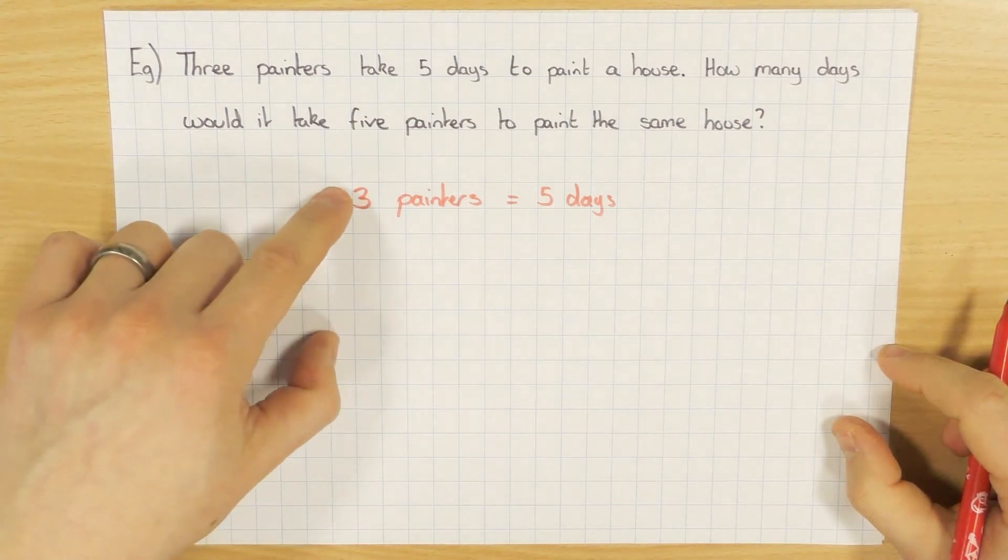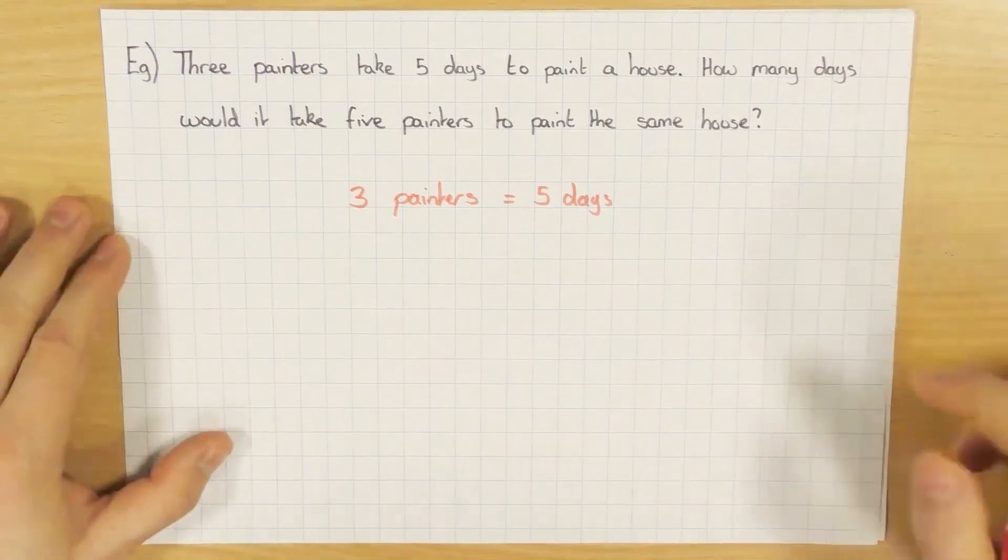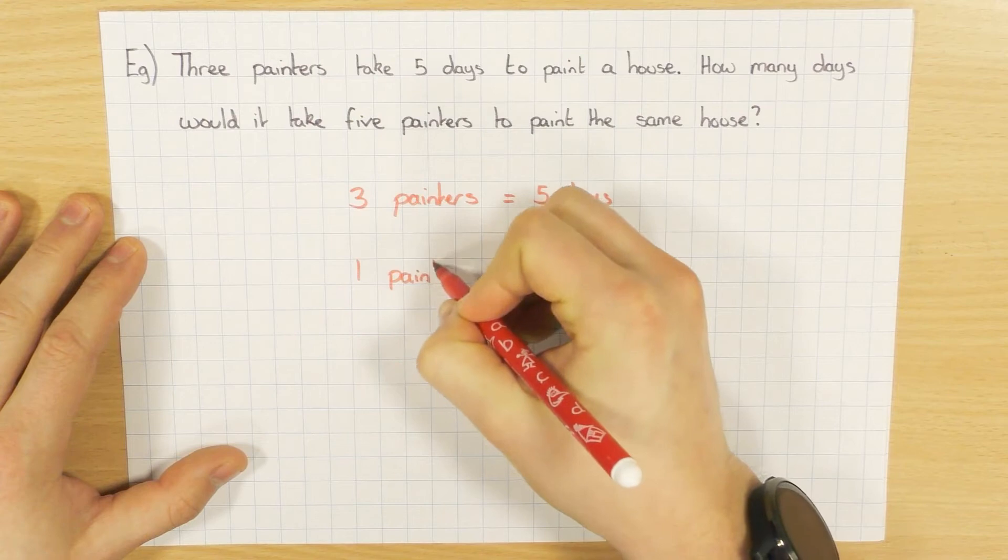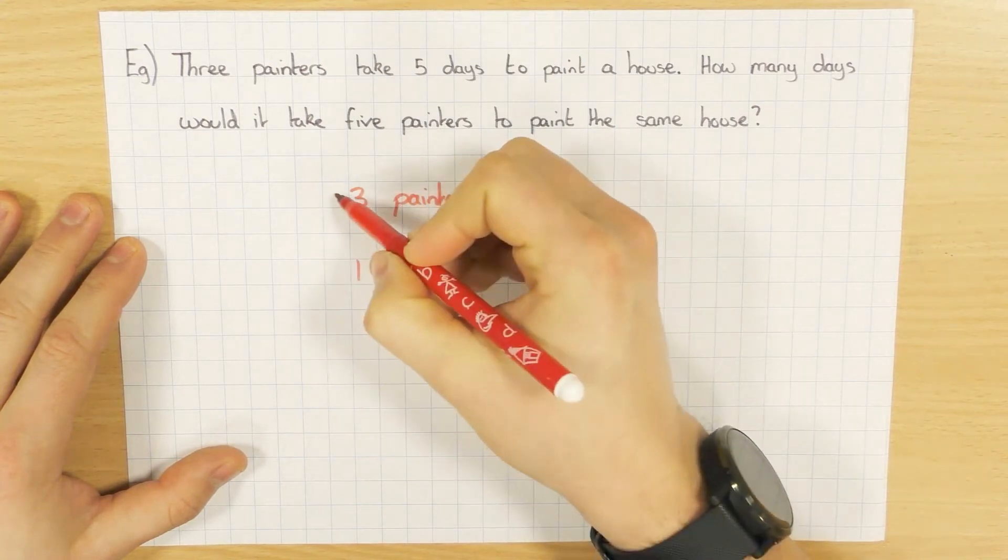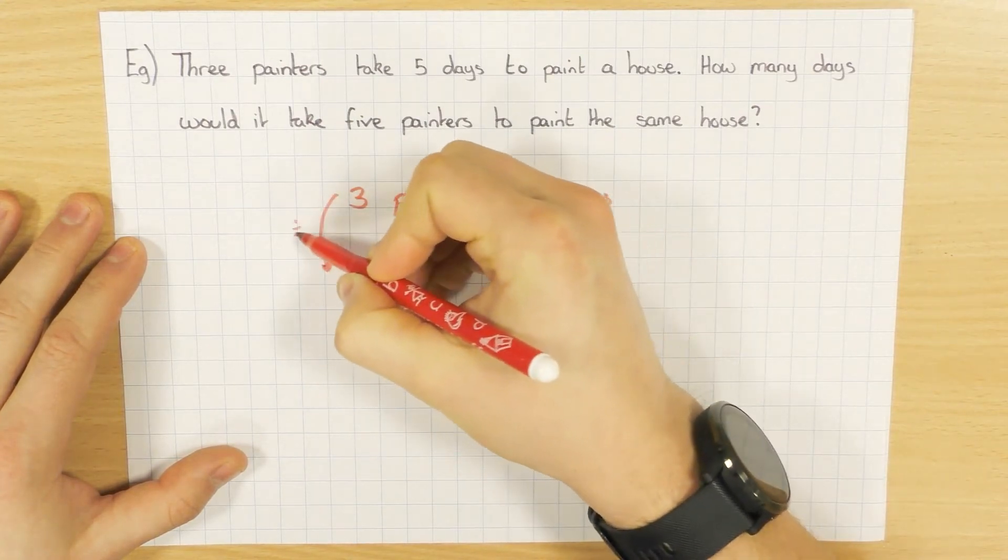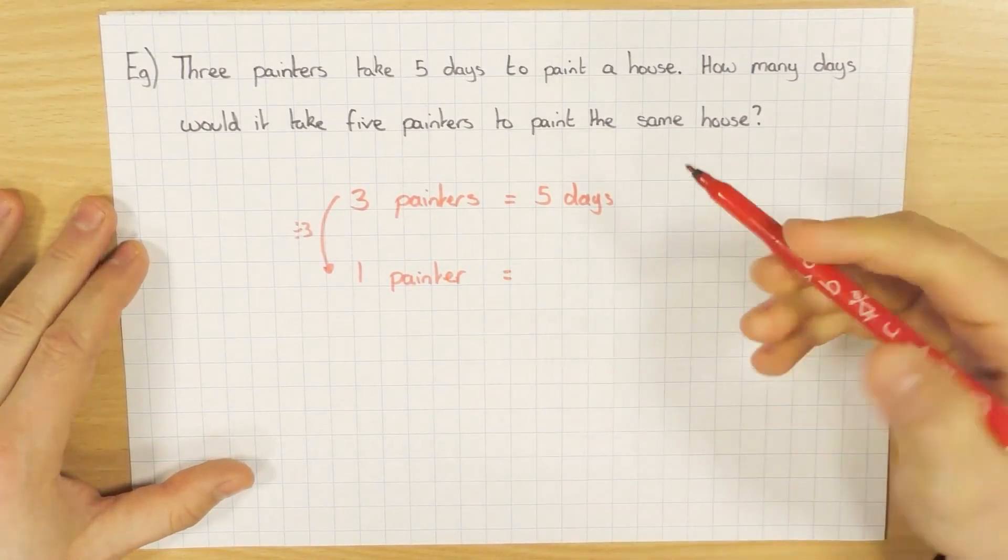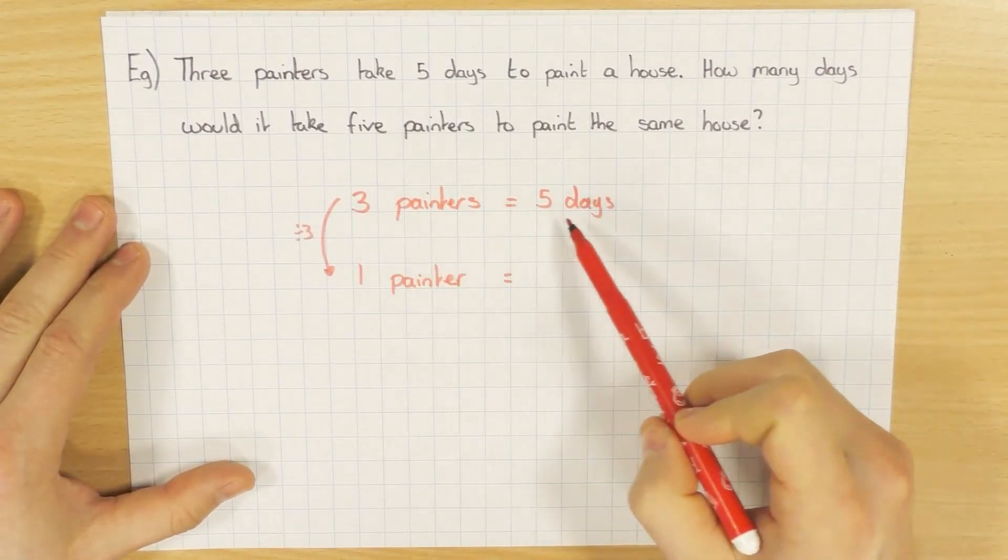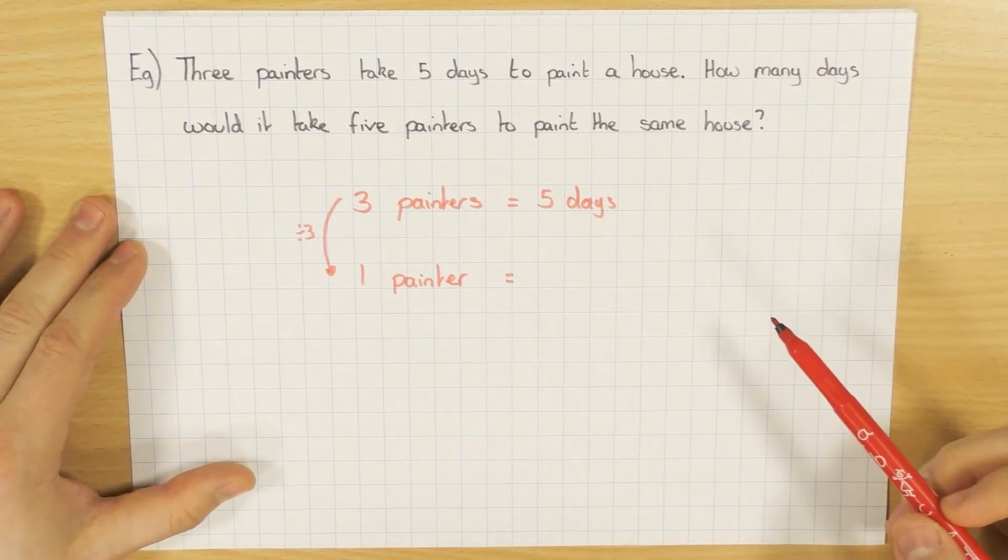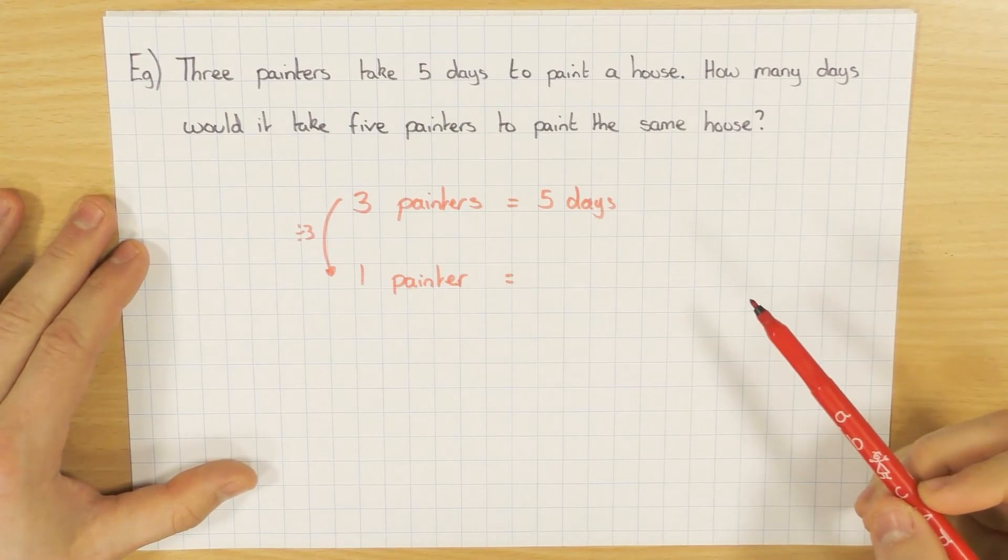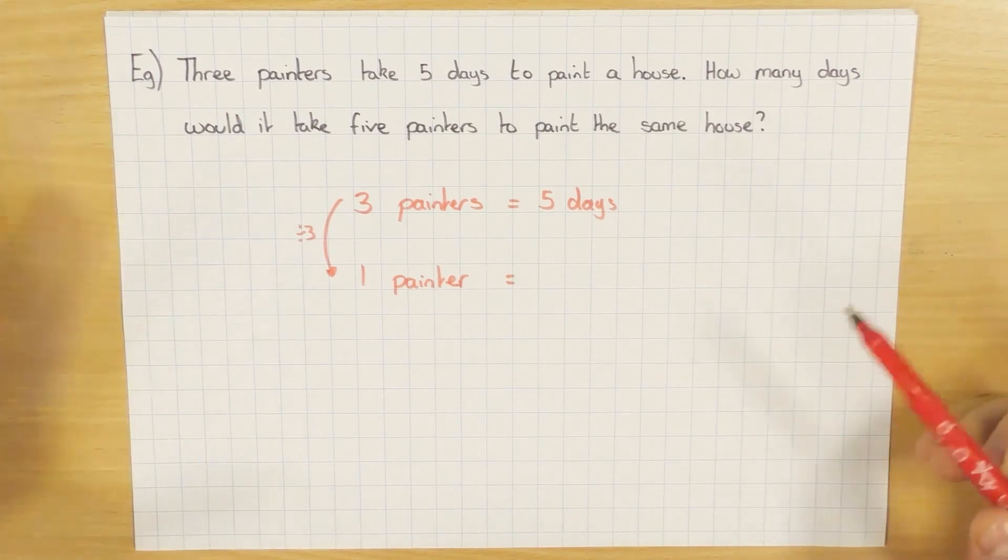So this is where people would go, I need to find out what one painter can do, which is absolutely fine. And that's exactly the same. We need to divide by three, so we need to find out how much one painter can do. This is where it's slightly different. If three painters take five days to paint a house, it's actually going to take one painter longer to paint the house if he's on his own. So it's one of those sort of common sense things.